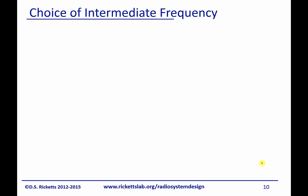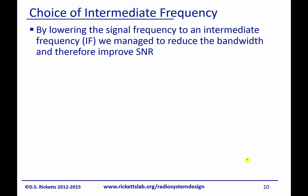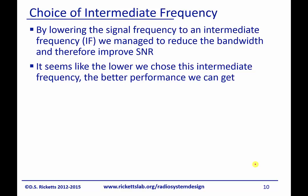The question that comes up now is: how do we choose the IF frequency? By lowering the signal frequency to the IF, we manage to reduce the bandwidth and therefore improve SNR. The reason the bandwidth decreases is because we can have a filter with a lower absolute bandwidth. So it seems like if we just go lower and lower in frequency, our performance would get better and better.